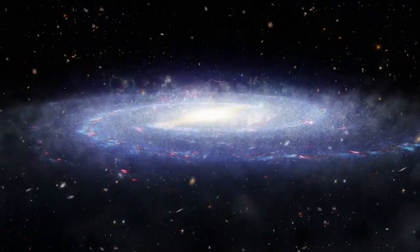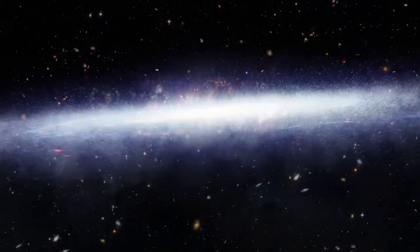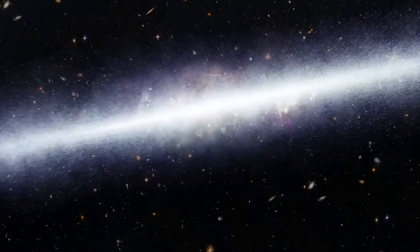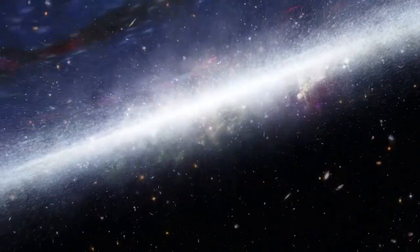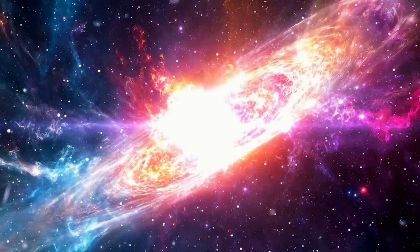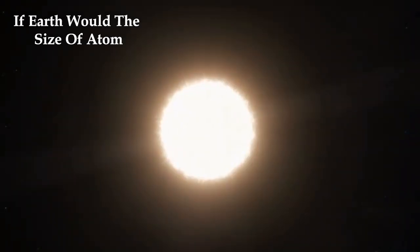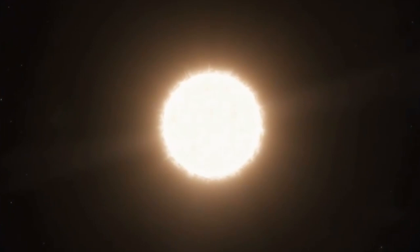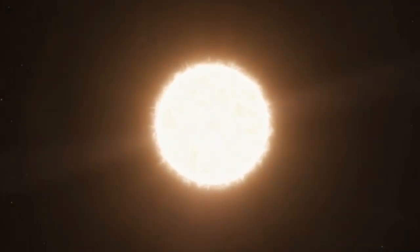As light travels toward us, the fabric of space stretches, pushing those distant galaxies even further away. Picture this: if Earth were the size of an atom, the observable universe would be the size of our planet. And here's the kicker - this observable universe might just be a tiny fraction of what's truly out there. Beyond the edge of what we can see lies an infinite universe stretching endlessly in all directions.